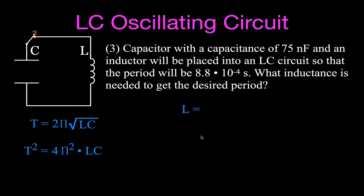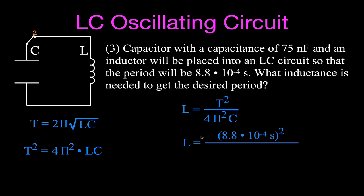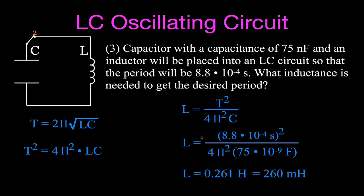Plugging in: T = 8.8×10⁻⁴ seconds (squared), divided by 4π² and C = 75 nanofarads. You get L = 0.261 henries, which is 261 millihenries. Combining that inductance with the 75 nanofarad capacitor will produce a period of 8.8×10⁻⁴ seconds.